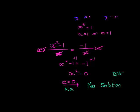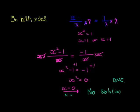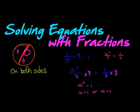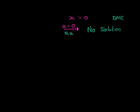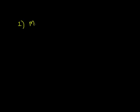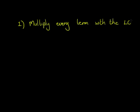In the next videos I'll look at examples, but here are the basic steps for solving an equation with fractions. The first step is to multiply every term with the LCM — the lowest common multiple — of the denominators.